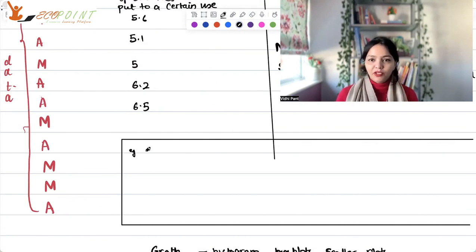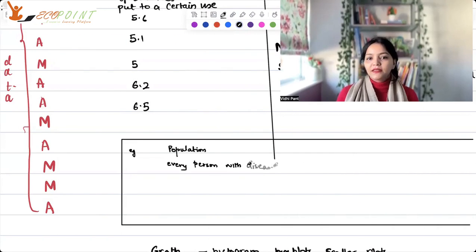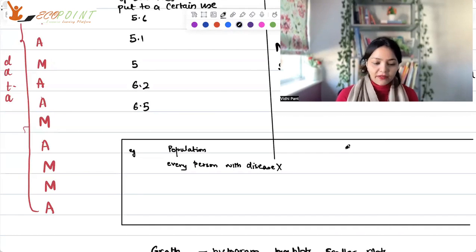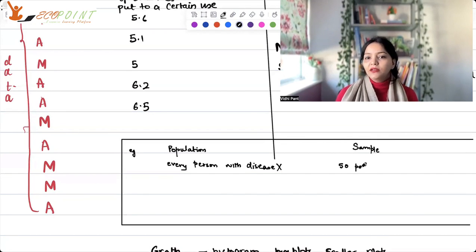Let's take another example to understand population and sample. Now, suppose a scientist wants to know something about a particular disease in the entire world. Population data would mean that you have the name and details of every person with disease x. Now, it's impossible for a researcher to go to each person and write down all the symptoms and everything.